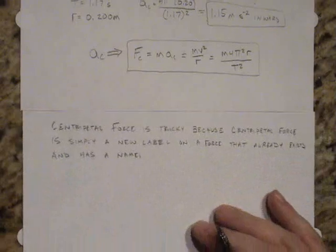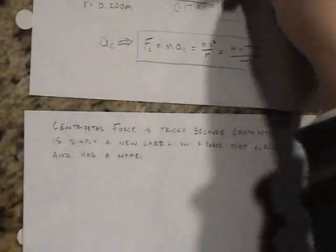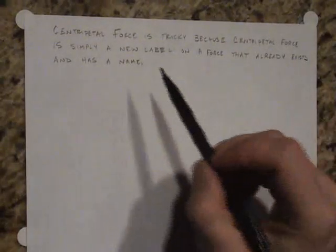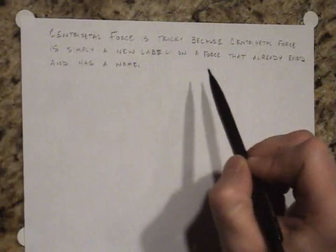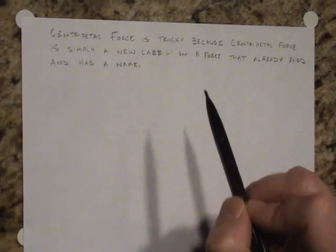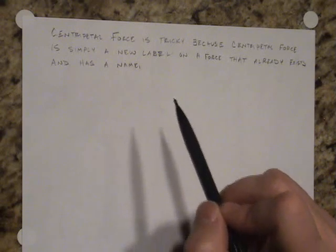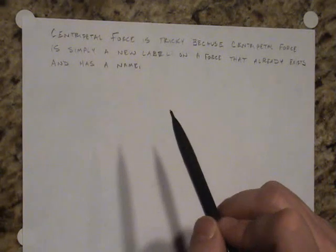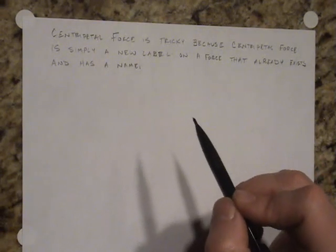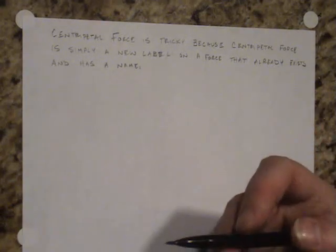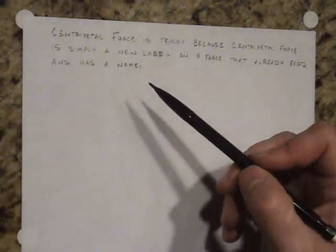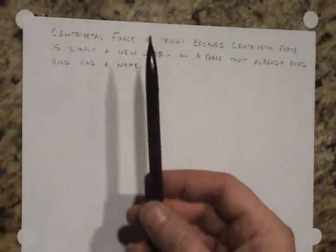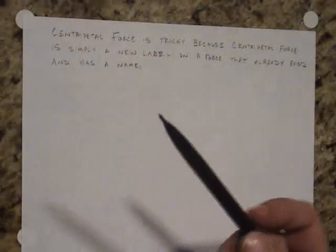Centripetal force is simply a new label on a force that already exists. For this reason, we want to be careful when we make our free body diagrams that we never actually put the centripetal force in the diagram because the force already exists and it already has a name. It's just that force is producing this thing that we refer to as a centripetal acceleration. Whenever we say centripetal acceleration, we simply mean that we are changing the direction of the motion - left, right, up, down - somehow the direction is changing, but not necessarily the magnitude.